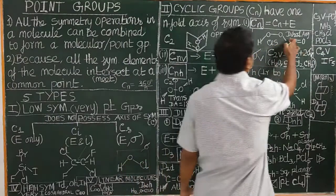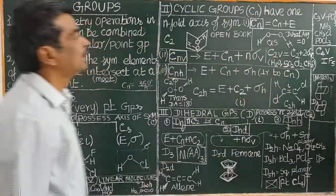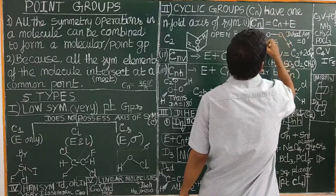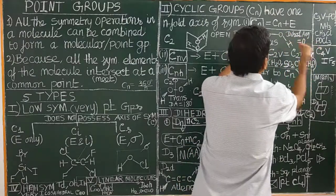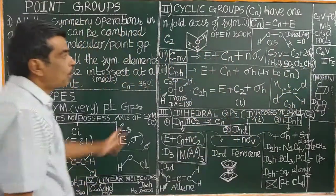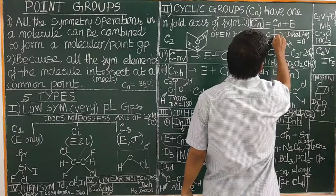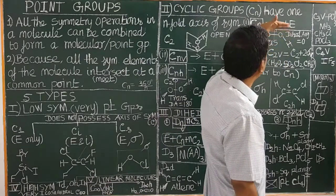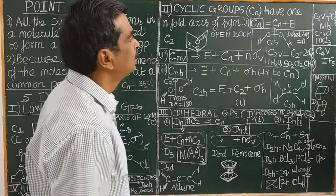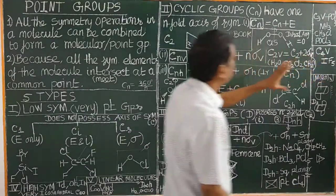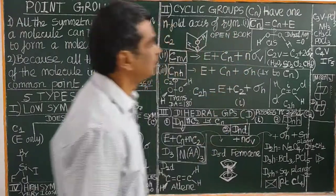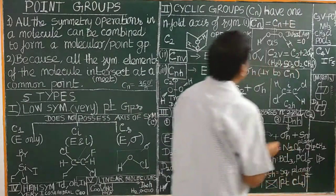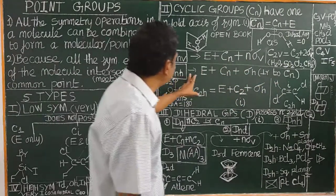In cis hydrogen peroxide, the dihedral angle is equal to zero. The dihedral angle is the angle between the two planes. In the cis configuration, the molecule lies in a plane, and there are two sigma V planes parallel to the principal axis of symmetry.